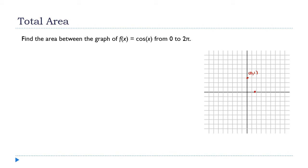Cosine is 0 at π/2, reaches negative 1 at π, and comes back up to 1 at 2π, which is about 6.28 on the x-axis. The graph shows a positive hump, then a negative section, then a positive hump again. I'm trying to find all three of these areas. The section from π/2 to 3π/2 is negative — every approximating rectangle there gives a negative area, so I need to fix that.